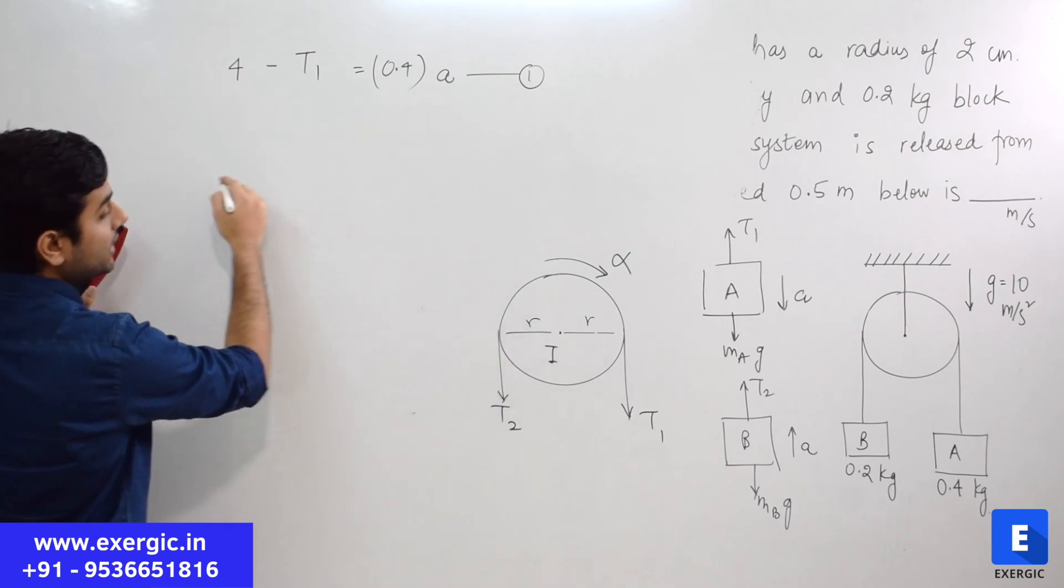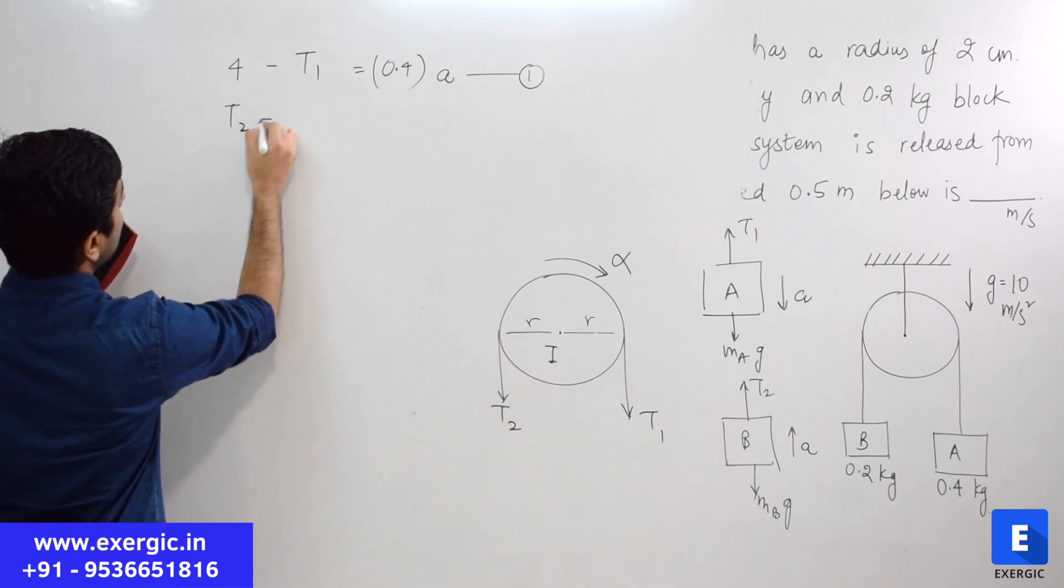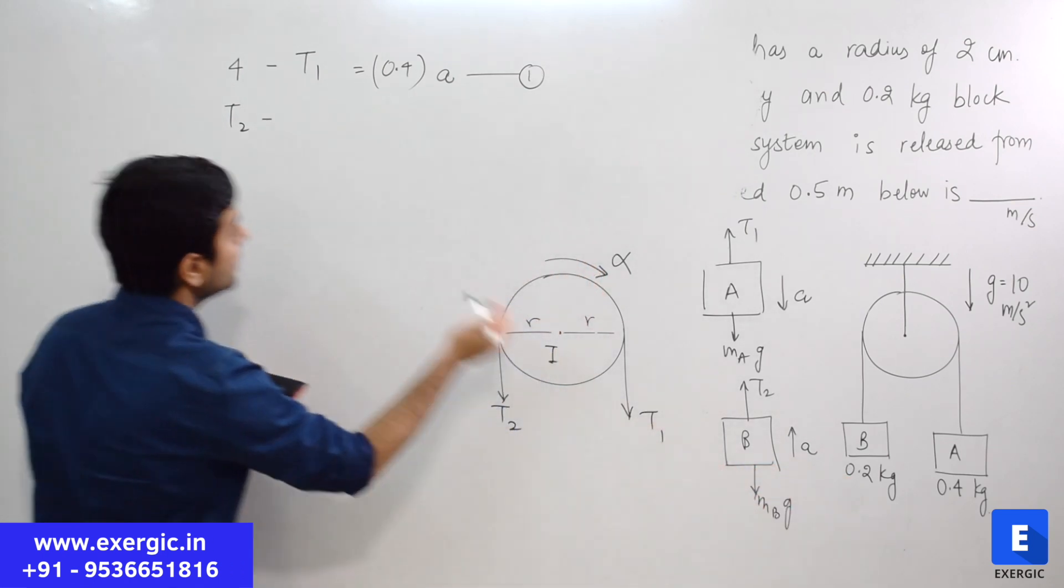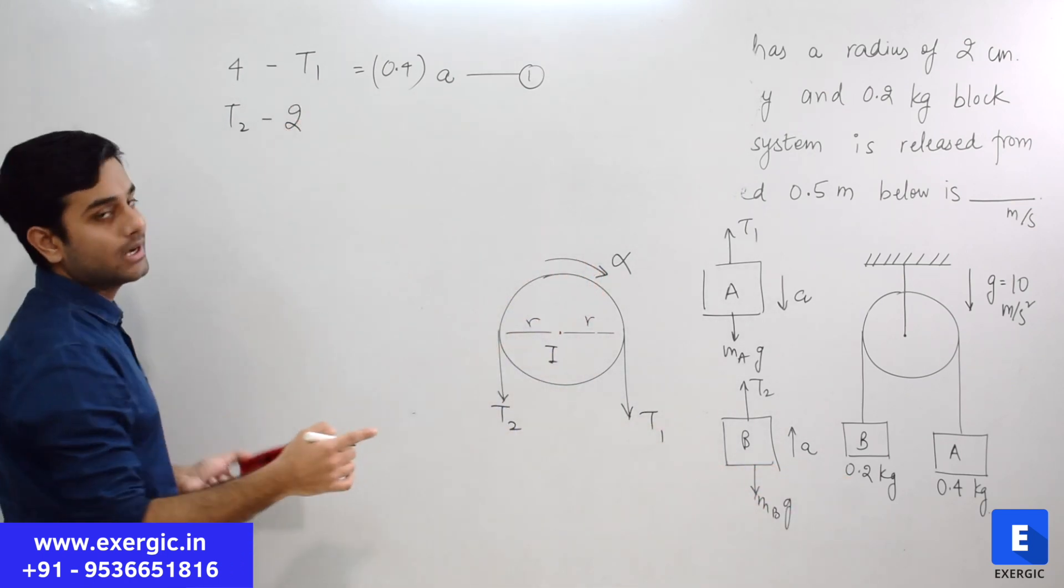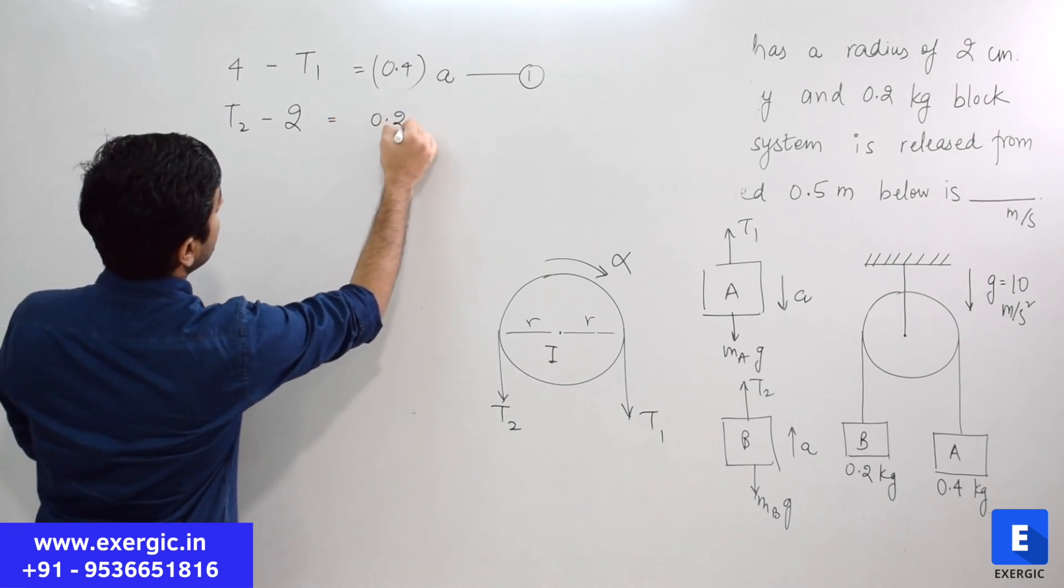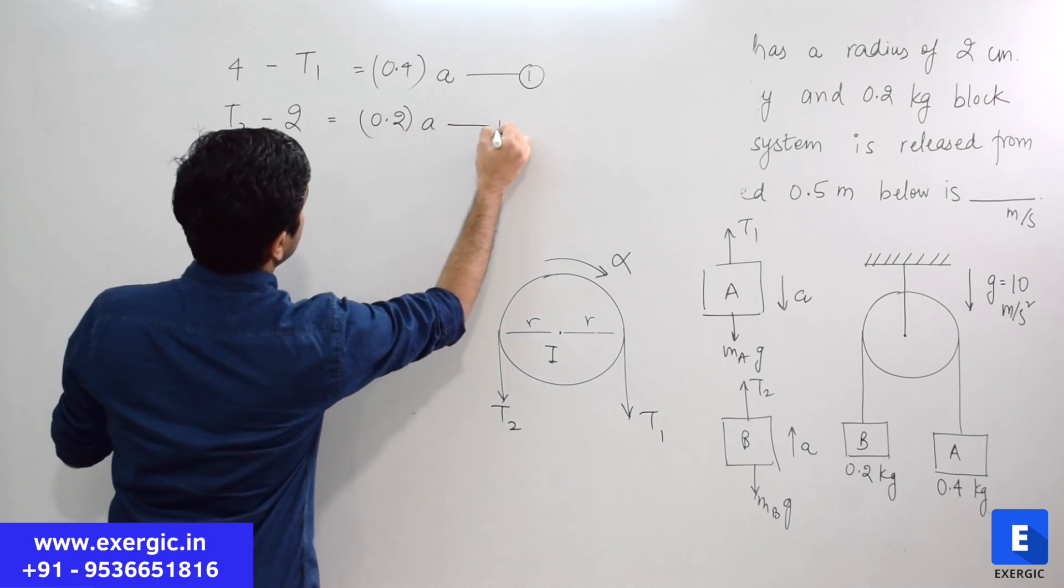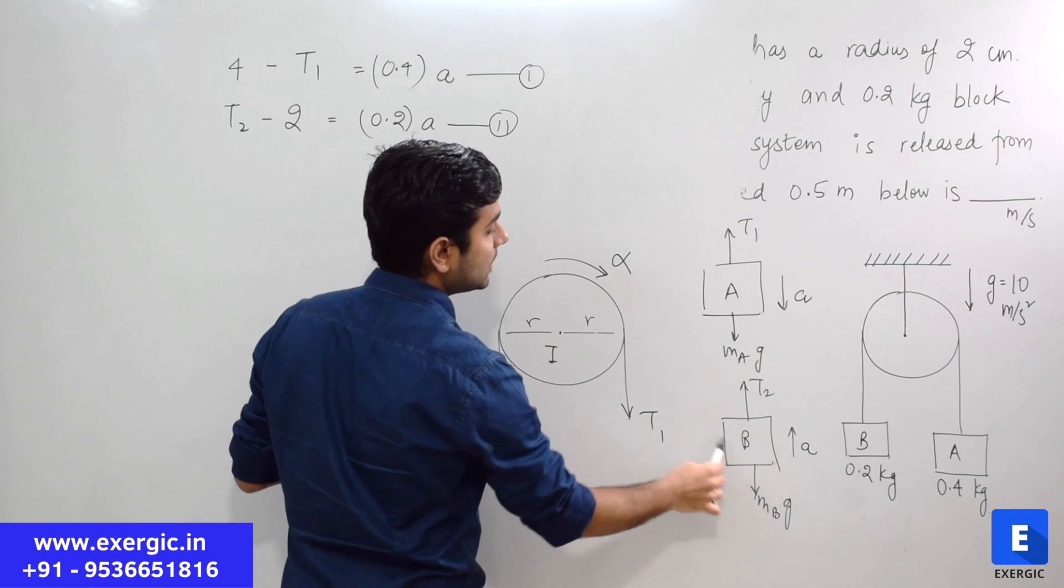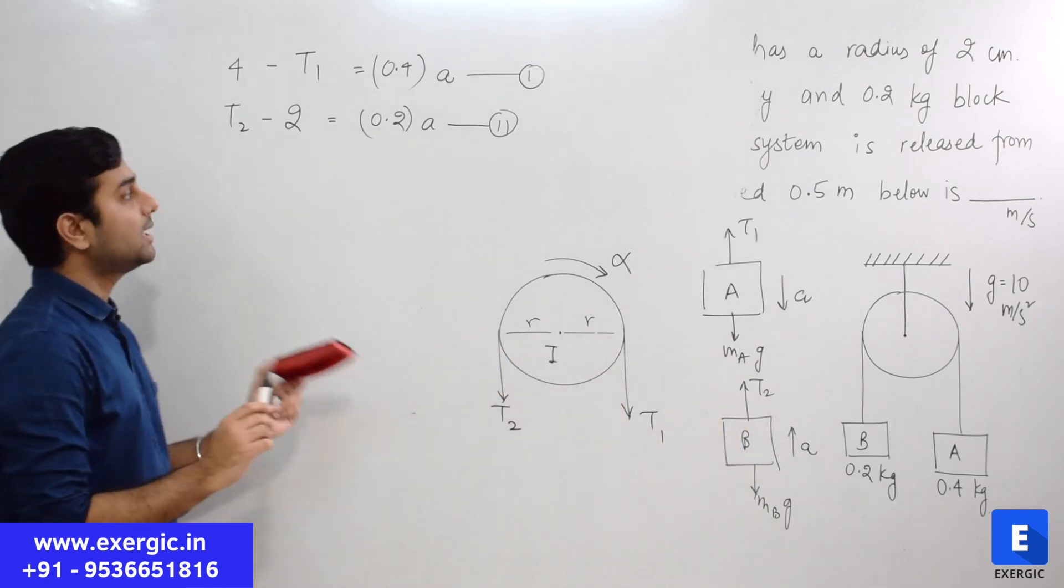Similarly for block B, it will have T2 in the upward direction, MBG in the downward direction, and net acceleration in the upward direction. What we can write: T2 minus 0.2G, this is 0.2 mass, G is 10 so you can directly write it as 2, equals 0.2 multiplied by A. This is net force in the upward direction equals mass multiplied by acceleration in the upward direction.